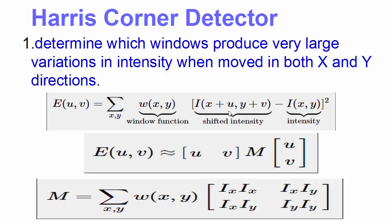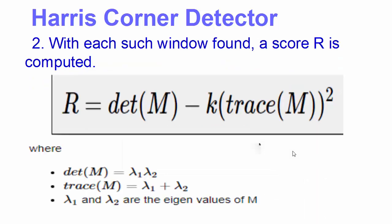After applying the Taylor expansion, you'll get this kind of approximate value where M is equal to this value. In this equation, I_x and I_y are the image derivatives in the X and Y direction respectively. This can be easily found using the cv.Sobel method in OpenCV. Now comes the second step where we calculate the score R.